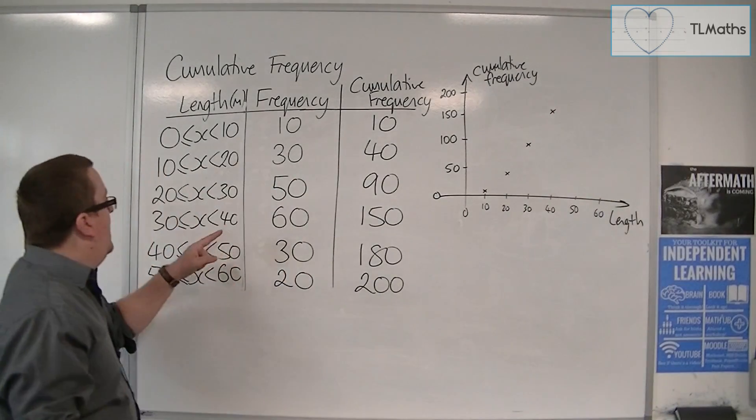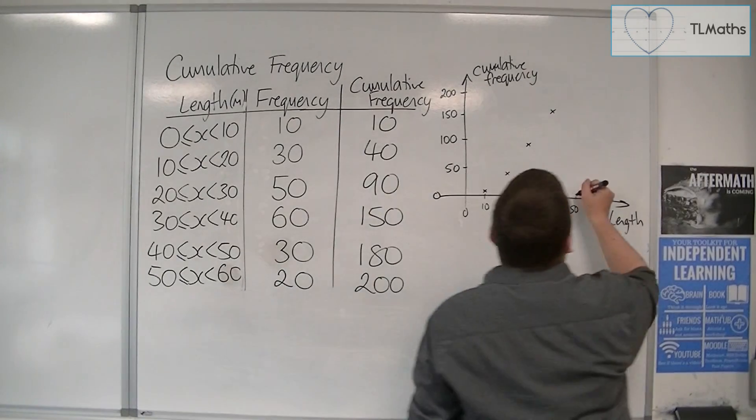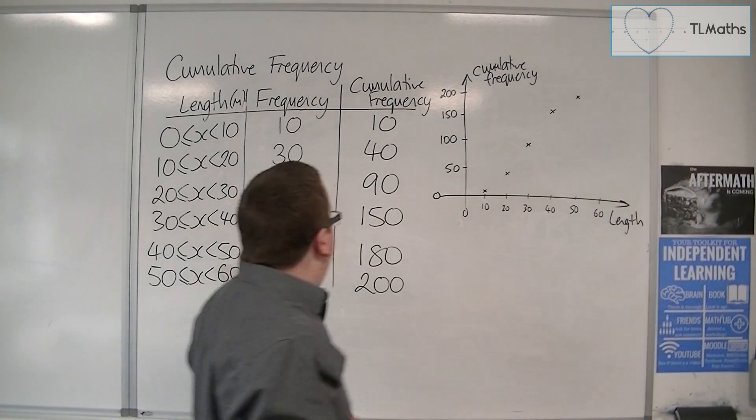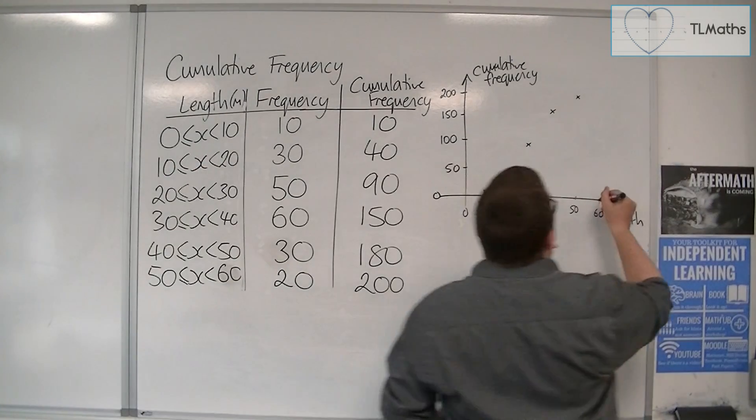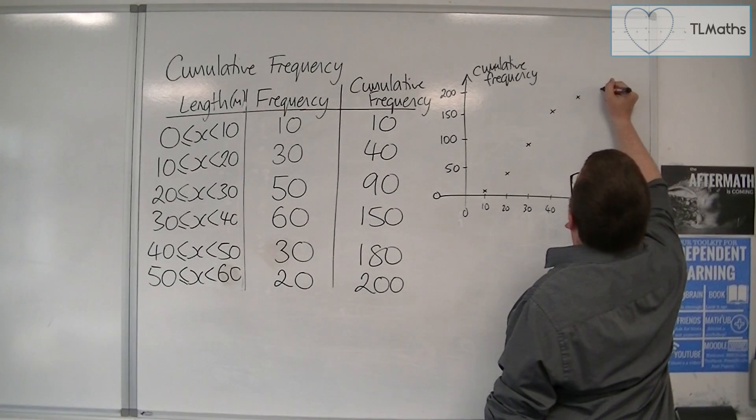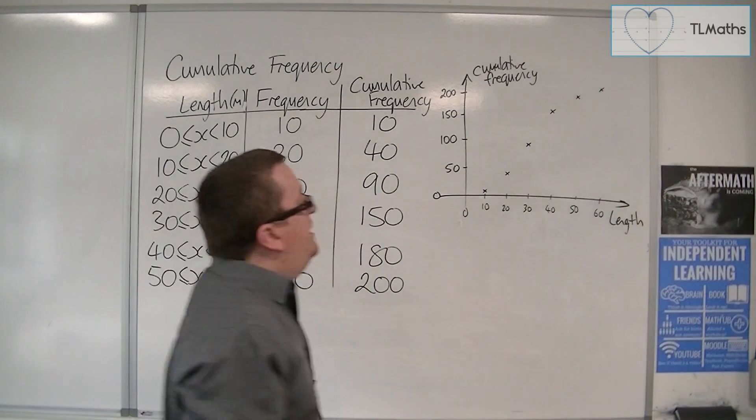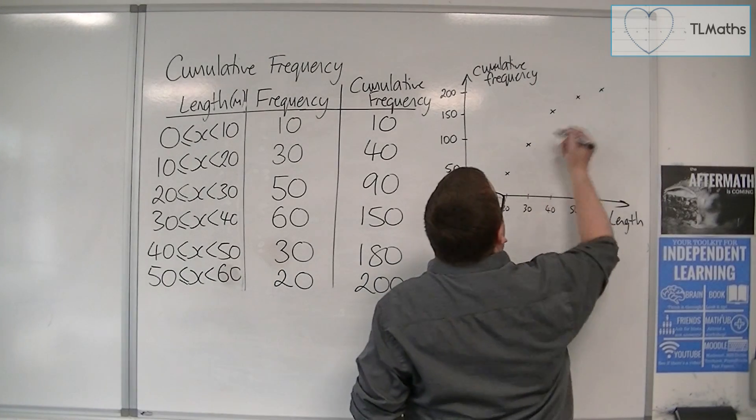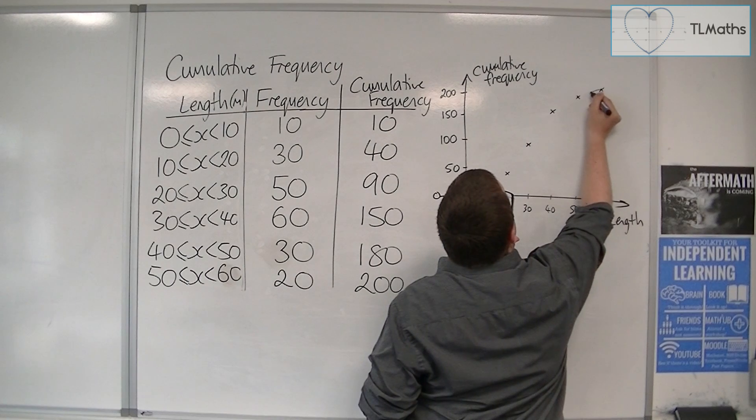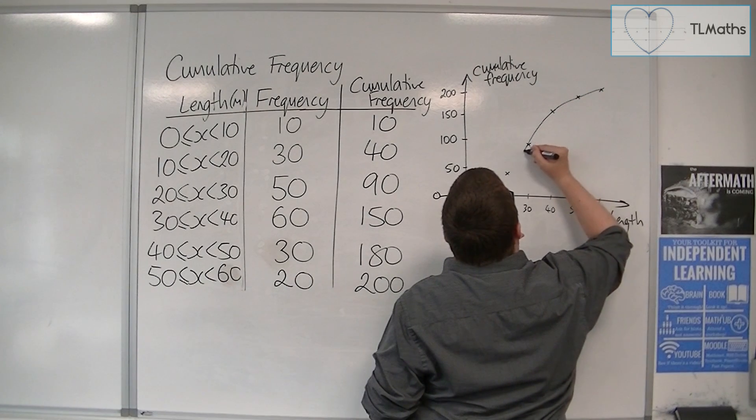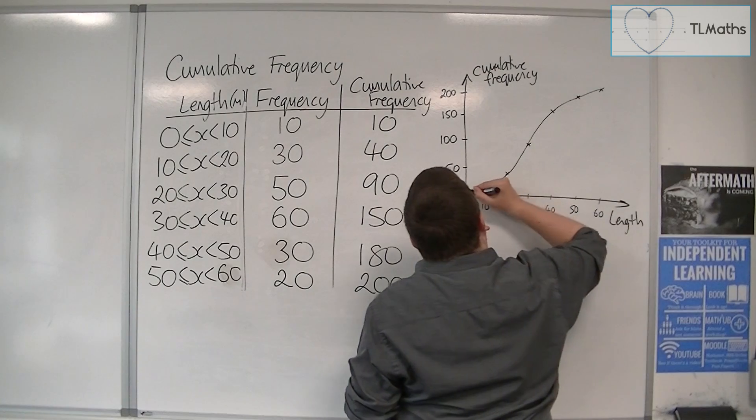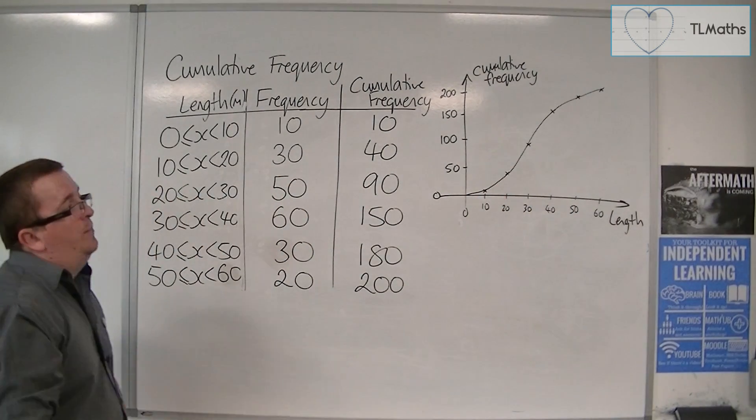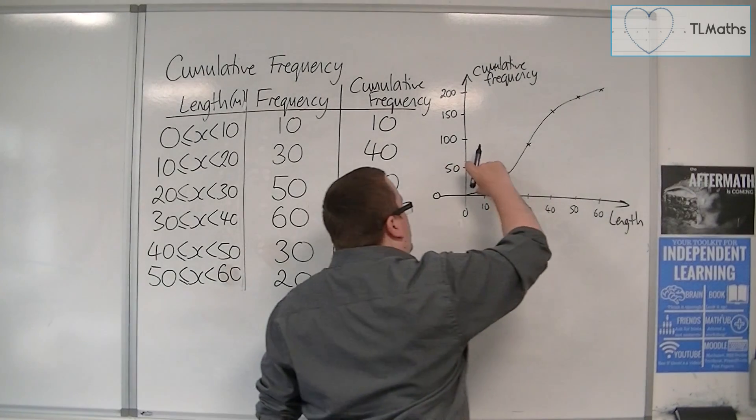Then we have 50, 180. So 50 and then 180, so about there. And then finally we have 60 and 200. So 60 and then 200. And in the majority of cases, what you find is you get a curve. It's kind of like an S curve. And I'm just going on to 0, 0 there.